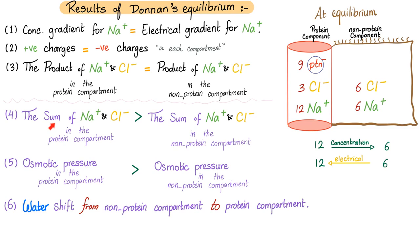Now the three inequalities. The sum, oh addition, of sodium and chloride in the protein compartment is greater than the sum of sodium and chloride in the non-protein compartment. Let's verify. Three plus 12 equals 15, but six plus six is only 12. Oh yeah. Therefore, if you have 15 here but 12 here, in other words, if the number of particles is greater here than here, therefore the osmotic pressure, which cares about the number not the size, the number is going to be greater in the protein compartment than the non-protein compartment, which results in water shift from the non-protein compartment and towards the protein compartment. And this is the beauty of the Donnan's equilibrium.